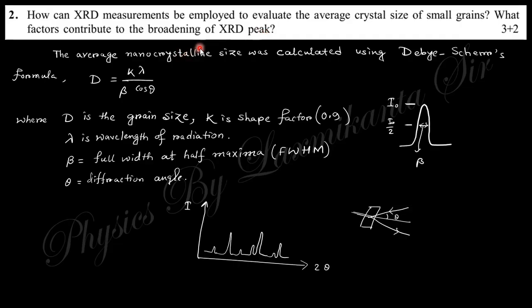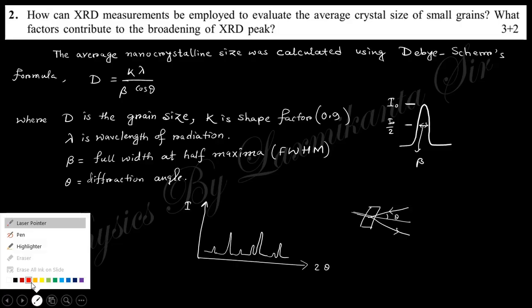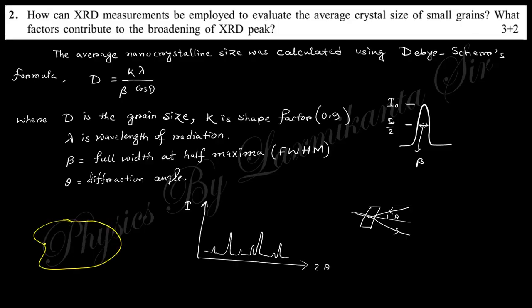For XRD grain size, suppose you have a crystal with some grains. In this grain, there are planes along different directions. You can see this is one grain, another grain - there are four grains total.